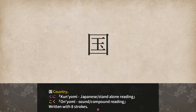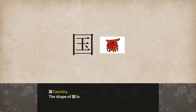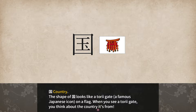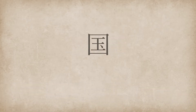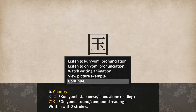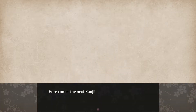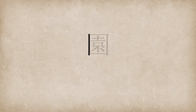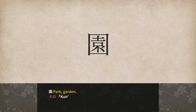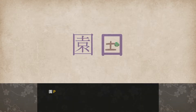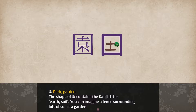Country: kuni for kun'yomi and koku for on'yomi, written with eight strokes. The shape of kuni looks like a torii gate, a famous Japanese icon on a flag — when you see a torii gate, you think about the country it's from. Next, 園 (sono/en): park or garden, sono for kun'yomi or en for on'yomi, written with 13 strokes. The shape contains the kanji tsuchi for earth or soil — you can imagine a fence surrounding lots of soil as a garden.